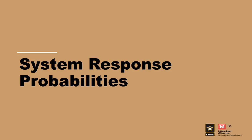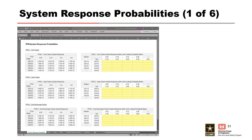Now that the joint loading probability matrix is complete, we turn to our system response probabilities. System response probabilities have been previously elicited for PFM1, PFM2, and PFM3 for a range of peak stage and peak ground acceleration as shown in the tables on the left of the slide. Next, we take the elicited system response probabilities and use them to populate system response probability tables within the joint loading probability matrix.